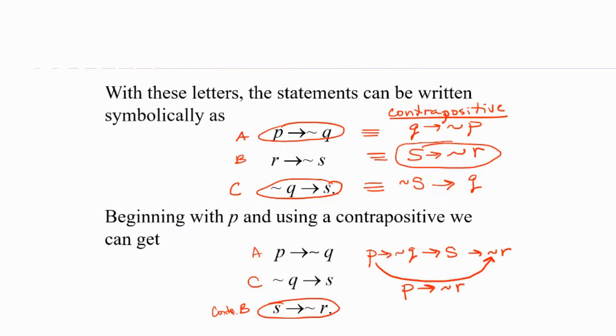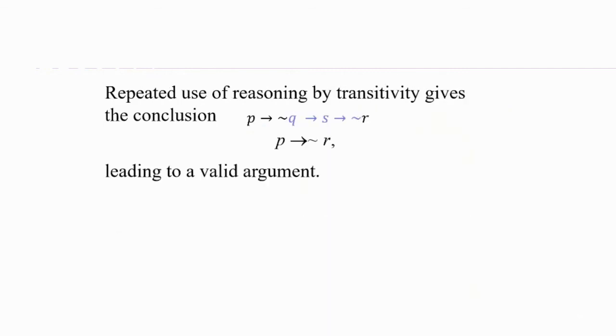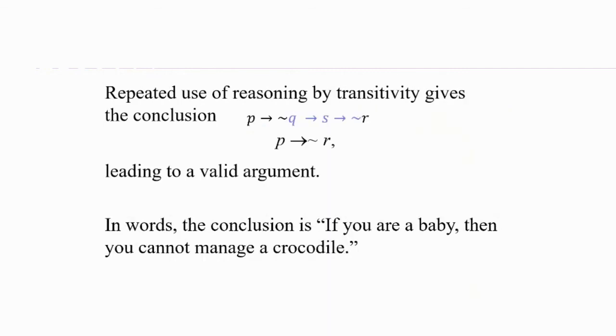By using the contrapositive and turning B around, we're actually able to use all three and come to a valid conclusion. That conclusion is if you are a baby, then you cannot manage a crocodile, which is crazy, right? It's a very strange statement. But we're not looking for whether the statement is true or false, just if the argument is valid or invalid. And we know by transitivity that this is a valid conclusion to the argument we were given.